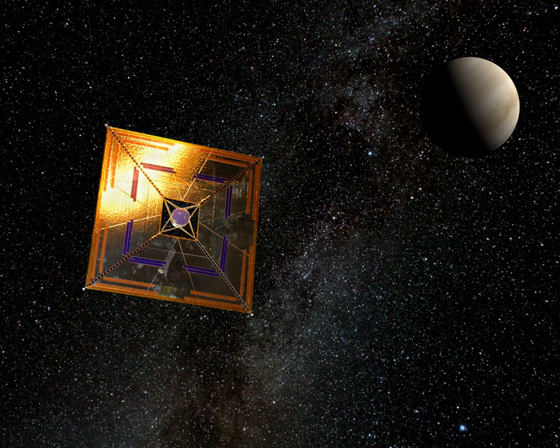Solar sails use a phenomenon that has a proven, measured effect on spacecraft. Solar pressure affects all spacecraft, whether in interplanetary space or in orbit around a planet or small body.